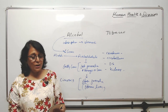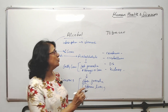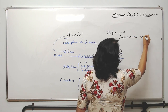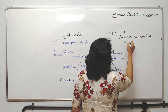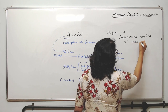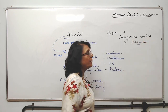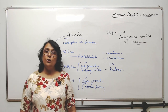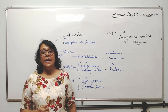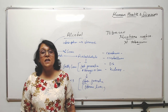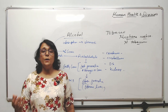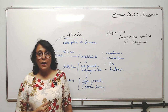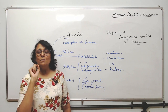Nicotiana rustica and Nicotiana tabacum are the two plants whose leaves are used to make tobacco. Tobacco can be smoked, chewed, or sniffed. When a person smokes, the smoke goes into the lungs and contains unburnt carbon pieces.